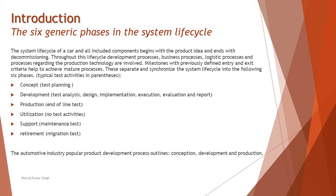The automotive industry also uses a popular product development process with three terminologies. Many organizations summarize the six phases into three phases called conception, development, and production. The remaining activities — release, maintenance, and retirement — continue as an ongoing process over a longer time. That is the general life cycle of a project or product in the automotive industry.